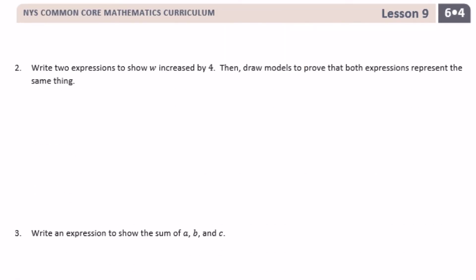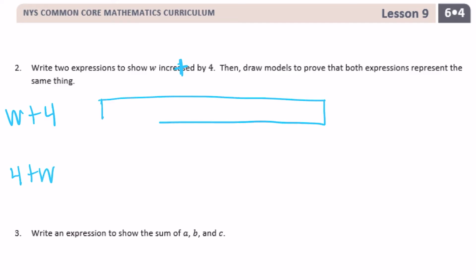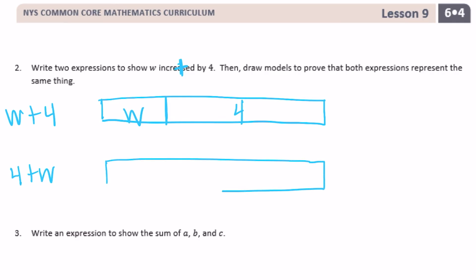Number 2: write two expressions to show w increased by 4, then draw models to prove both expressions represent the same thing. W increased by 4 is w plus 4, or flipped: 4 plus w. We can show w plus 4 in a bar diagram, and then flipped with 4 slightly larger, 4 plus w.